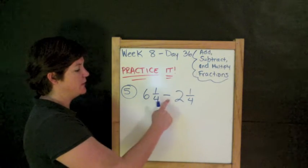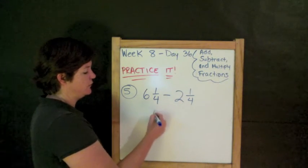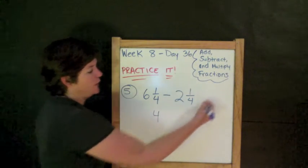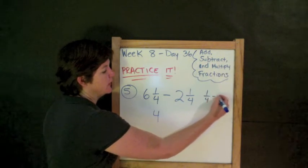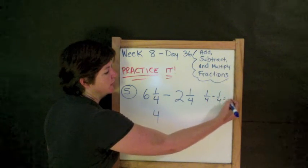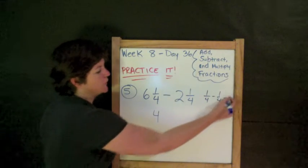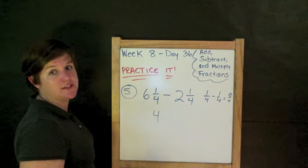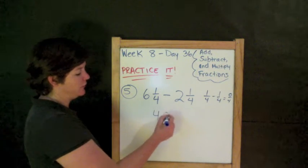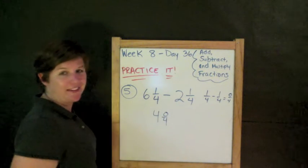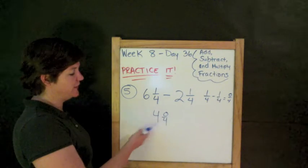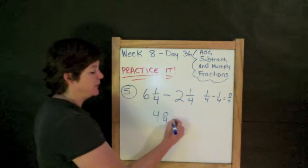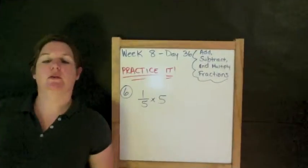So, 6 minus 2 is 4. And ¼ minus ¼. My denominators match. So, 4. 1 minus 1 is 0. And there's no such thing as, well, there is such a thing as 0 fourths. But that's, I don't need to write it over here. Like, this answer would not, it's okay. But the better answer would just be plain old 4.